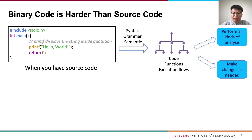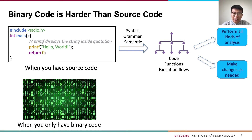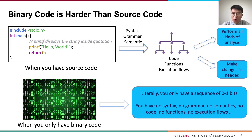With the help of this information, you can perform all kinds of analysis or make changes as needed by using the infrastructure of the compiler. However, when you only have binary code, literally you only have a sequence of zero-one bits, and that is the only readable formation. You have no syntax, no grammar, no semantics, no code, no functions, no execution flows, and so on.